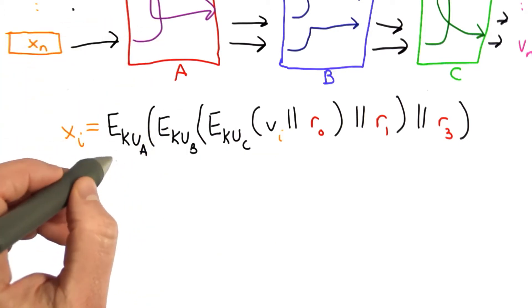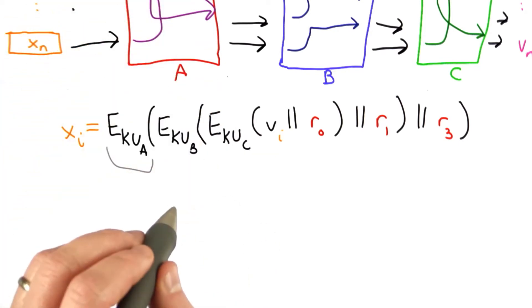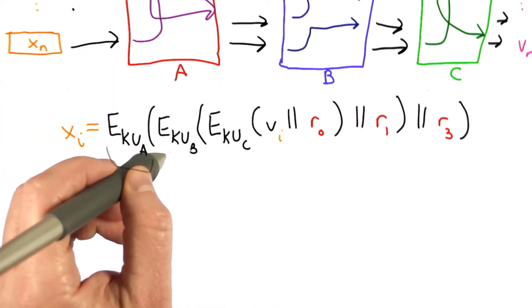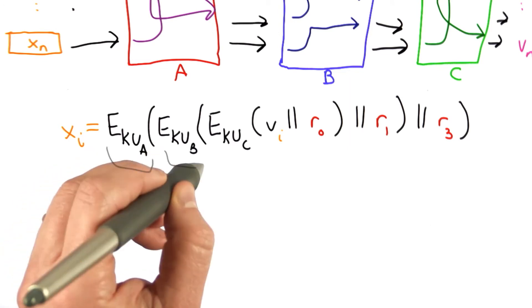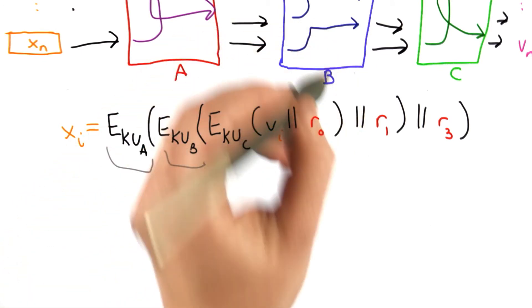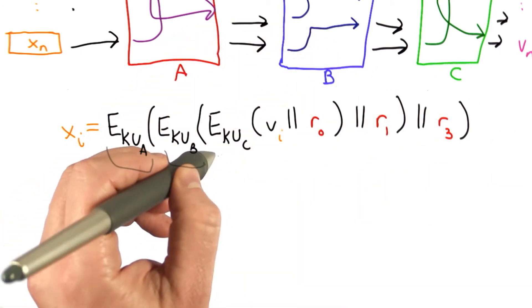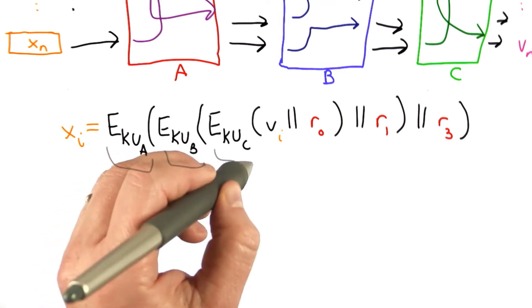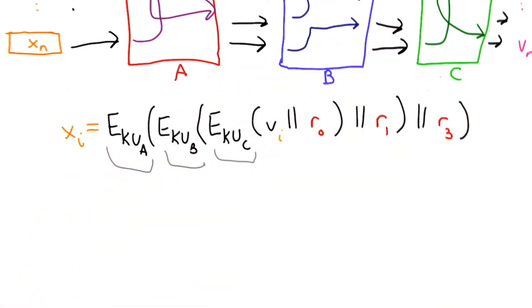Party A will decrypt the outer layer, randomly permute, and send the result to B, who will decrypt B's layer, randomly permute, and send the result to C, who will decrypt the final vote.